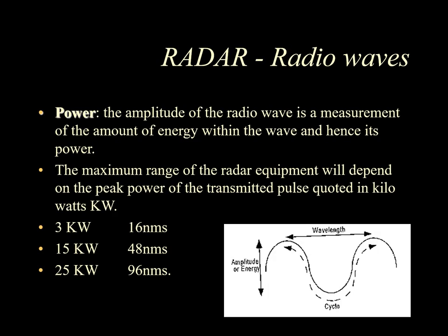In terms of power, the amplitude of the radio wave is a measurement of the amount of energy contained within the wave, and hence describes the power of the wave. Once the radio wave leaves the antenna, it will lose some of its energy in the atmosphere. You can draw an analogy with the echo sounder which uses sound waves — once the echo sounder releases sound waves, not the entire wave hits the bottom and returns; some energy is always lost.